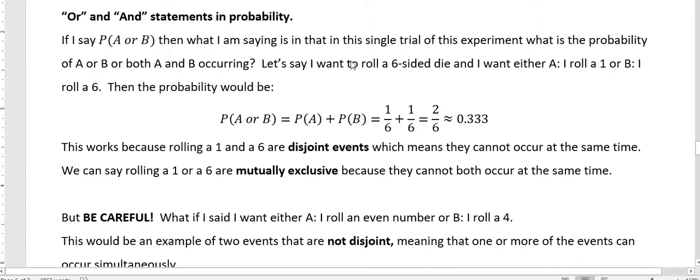So let's say I want to roll a six-sided die and event A is I roll a one or B I roll a six, then the probability of A or B would be the probability of A plus the probability of B. And I have a one in six chance of rolling a one and a one in six chance of rolling a six. So I have two out of six or 0.333 is the probability for rolling a one or a six.